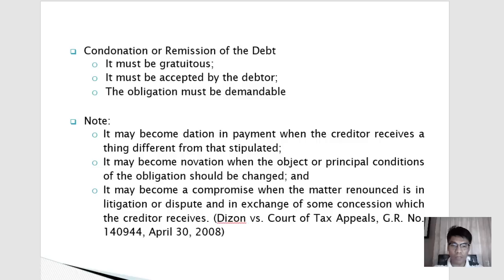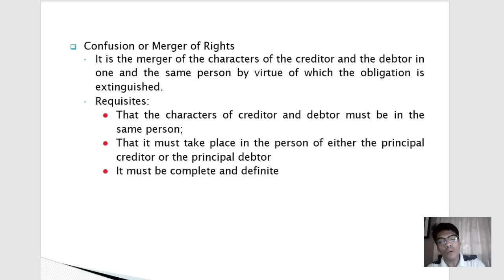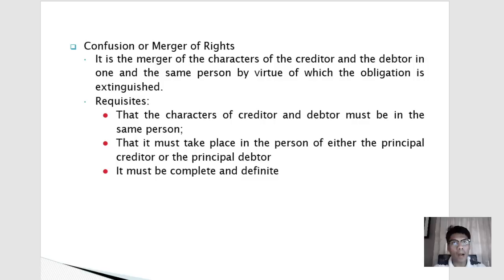Confusion or merger of rights is the merger of the characters of creditor and debtor in one and the same person, by virtue of which the obligation is extinguished. The requisites are: the characters of creditor and debtor must be in the same person, it must take place in the person of either the principal creditor or the principal debtor, and it must be complete and definite. For example, if ABC Corporation borrowed from DEF Corporation and on the third year ABC acquired DEF Corporation, there is now a merger — ABC need not collect the debt from itself.